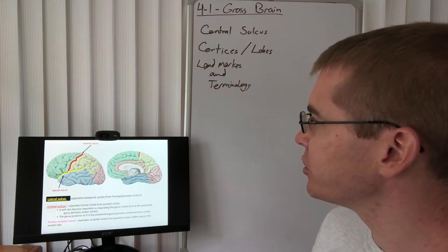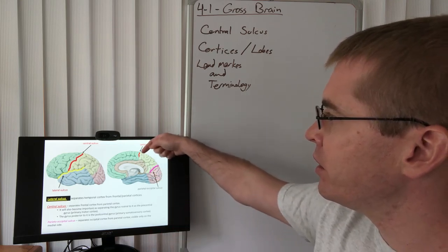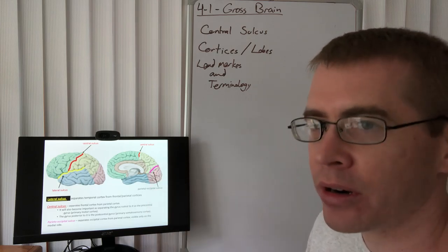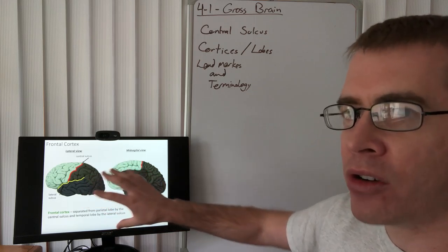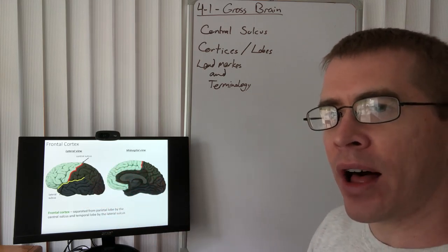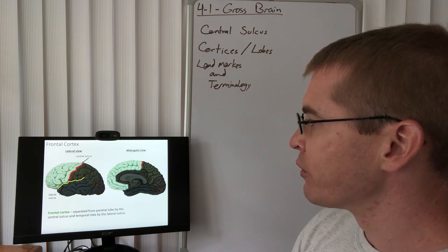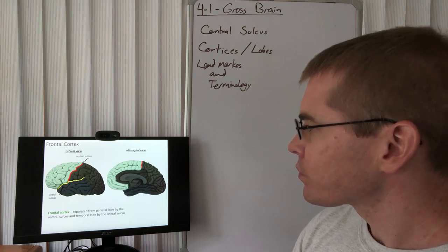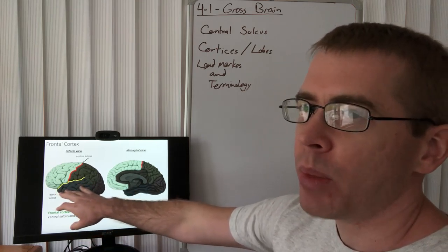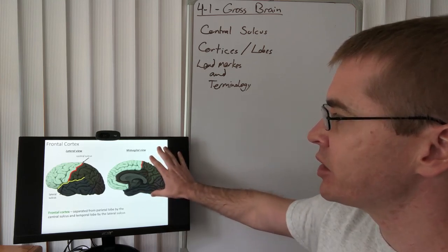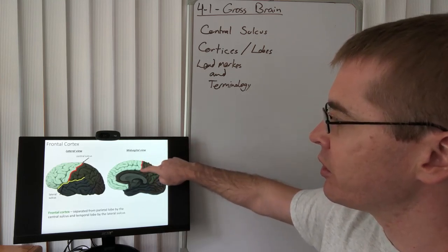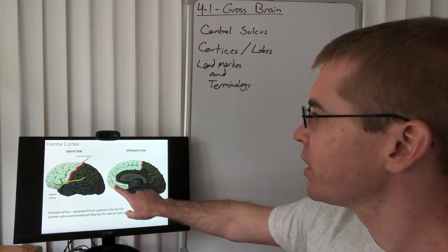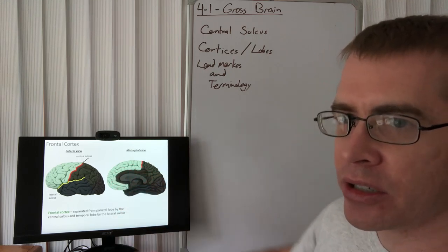We can also see here, separating the parietal cortex from the occipital cortex is the parieto-occipital sulcus. Not too hard there. So moving on, let's define all these cortices now and define their boundaries and barriers. So the frontal cortex is divided from the parietal cortex via the central sulcus. It's also divided from the temporal cortex below it by the lateral sulcus. We can see here in the mid-sagittal view how that central sulcus extends down into that mid-sagittal view. And we can see the frontal cortex anterior here.